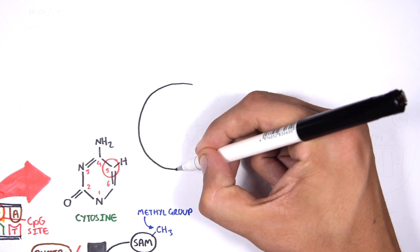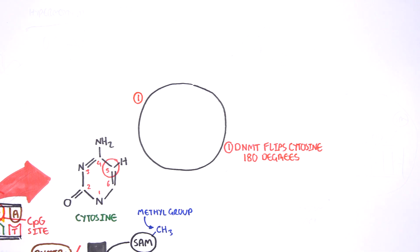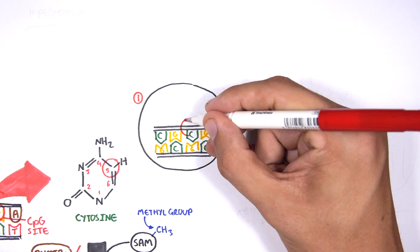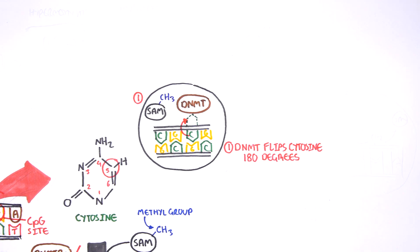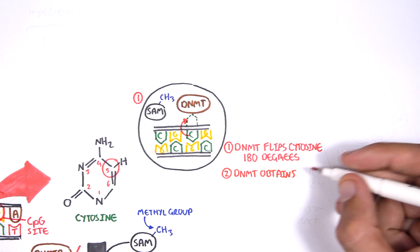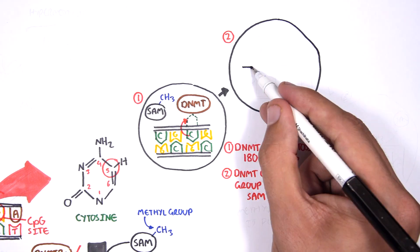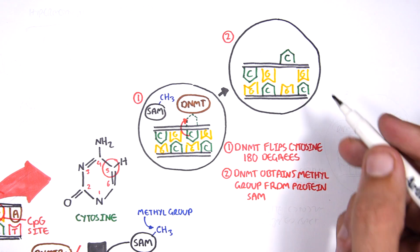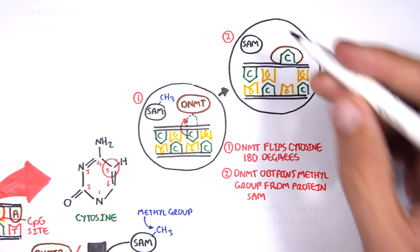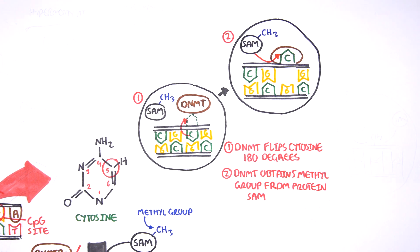It is thought that DNMT3B flips the cytosine base pair 180 degrees out of the strand like so. Then, the DNMT3B obtains the methyl group from SAM and transfers it to the cytosine. Finally, the methylated cytosine is flipped back.